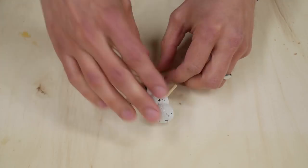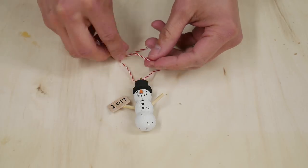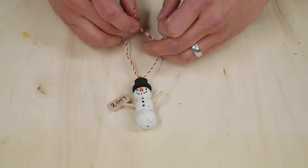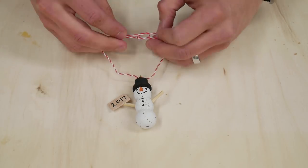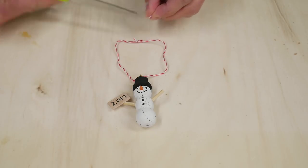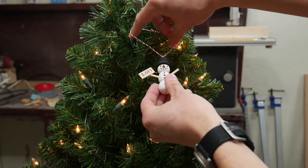When all the paint was dry, I added a string to the screw eye, and my wine cork snowman ornament was ready to hang on a tree.